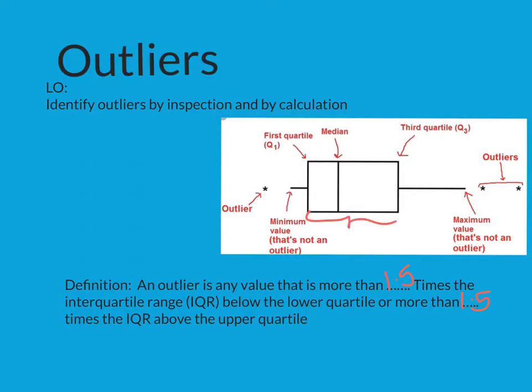So if this is your interquartile range here, let's say this was for example 10, if I times it by one and a half that's 15, so that will have to be more than 15.